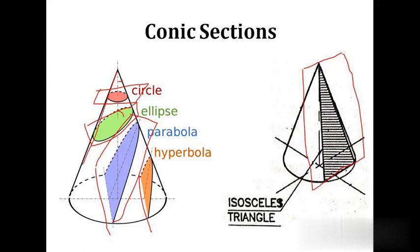These are the five basic shapes that you can get from a cone by cutting it using section planes. First: circle — the section plane should be parallel to the base or perpendicular to the axis and cut all the generators. Second: ellipse — the section plane should be inclined to the axis and cut all the generators. Third: parabola — the section plane should be parallel to one of the generators and cut the base. Fourth: hyperbola — the section plane should be parallel to the axis or perpendicular to the base, and cut the base. Fifth: isosceles triangle — the section plane should pass through the apex and cut the base.